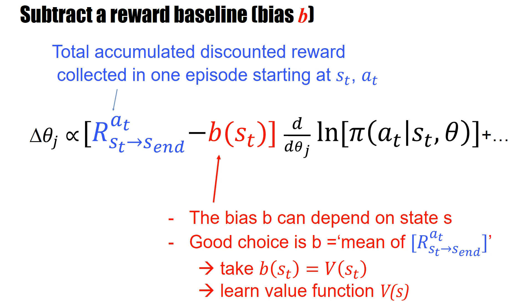Here we have the total accumulated discounted reward collected in one episode starting at st with action at. This bias can also depend on the state st, but it cannot depend on the action. This is just one of the terms, and we would have other terms with st+1, at+1, and so forth, completely analogous to what we have seen before. The bias can depend on the state s. What is then a good choice?